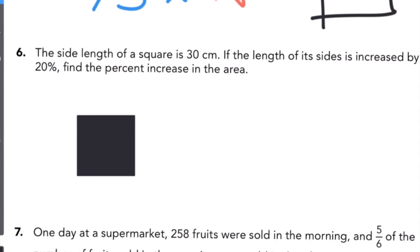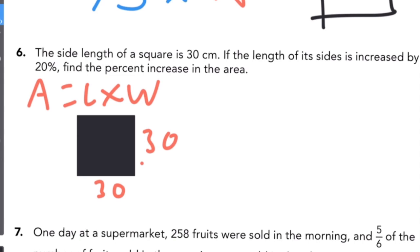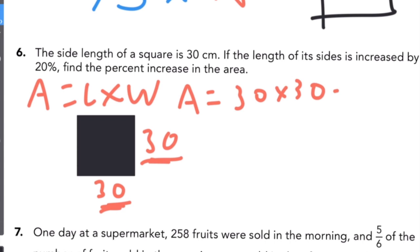The last problem says the side length of a square is 30 centimeters, so all sides are 30. The side length is then increased by 20%. Find the percent increase in the entire area. First, figure out the area of the original square: area equals length times width, so 30 times 30, which gives you 900. That's the original area.